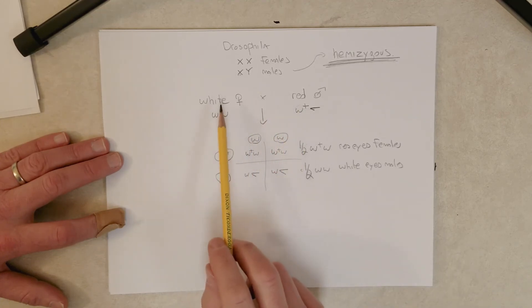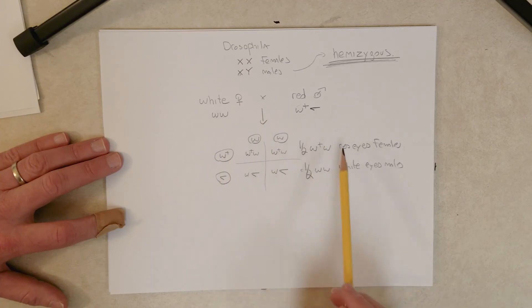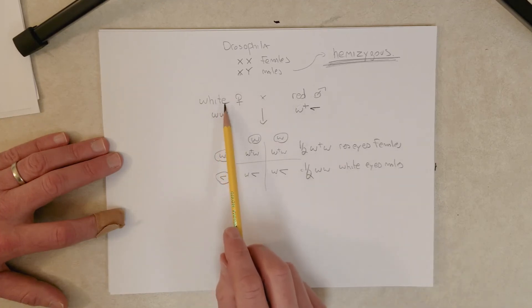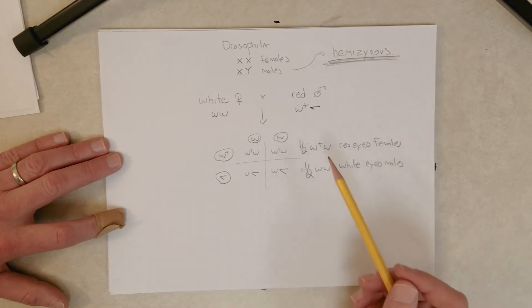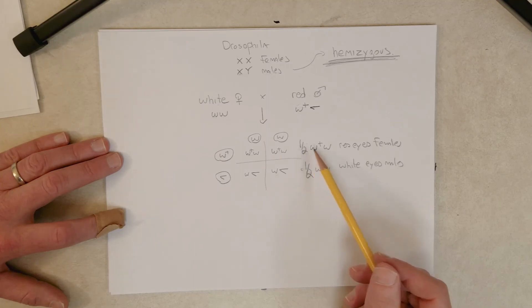So that's how we get this strange one half to one half ratio, one to one ratio in the F1 generation when we're crossing these two flies together. We're not crossing a homozygote to a homozygote, right? We're crossing a homozygote to a hemizygote. And that's part of the reason why we get this strange ratio. Also because of the way that the mom here has the recessive alleles for the mutant phenotype.